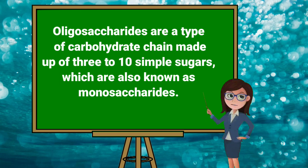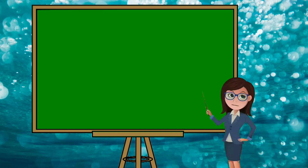Oligosaccharides are a type of carbohydrate chain made up of 3 to 10 simple sugars, which are also known as monosaccharides.